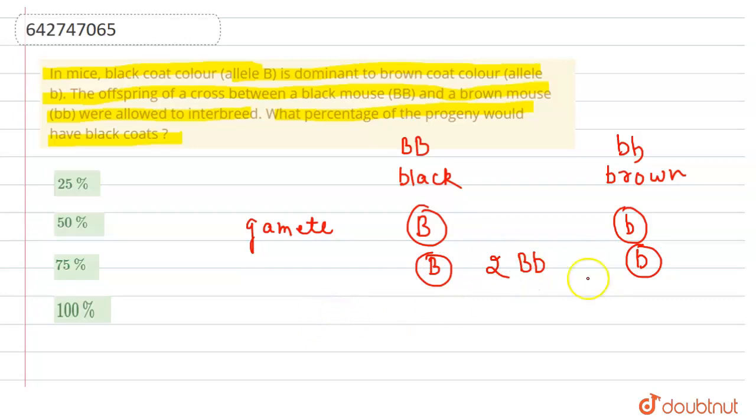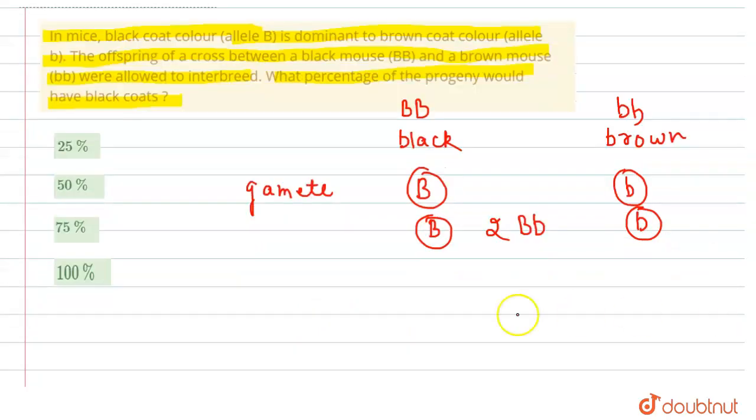Now we will form a Punnett square. The Punnett square will be used to make a cross here. So this is capital B small b, capital B small b. Now we will